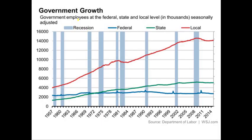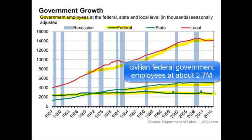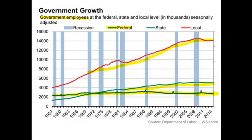While many think the federal government is getting bigger and bigger, the number of federal employees has remained fairly static over half a century — around 2.7 million, not including uniformed military — and has actually been declining somewhat. State government employees have been increasing a little, while local government employees have been increasing quite a bit. That's where you see a discrepancy between public perception and what's actually happening.